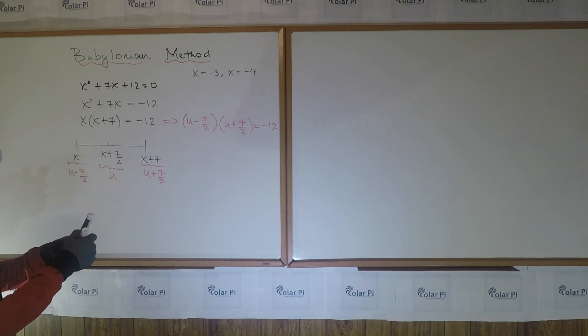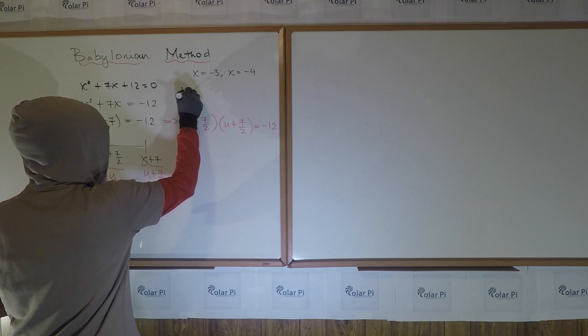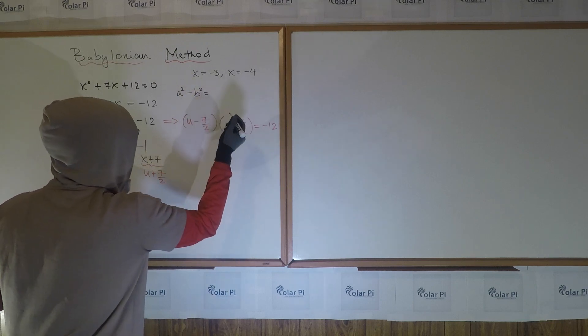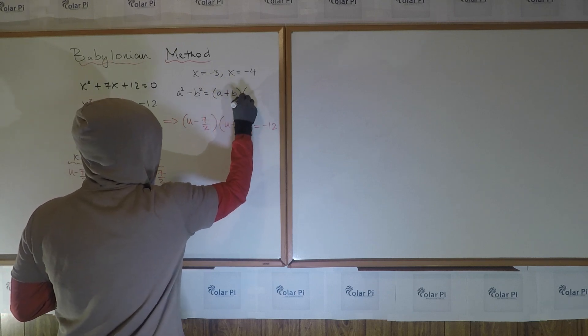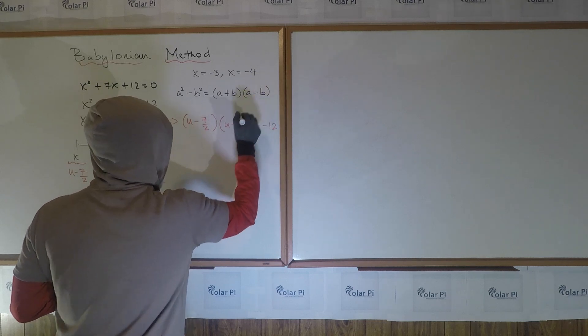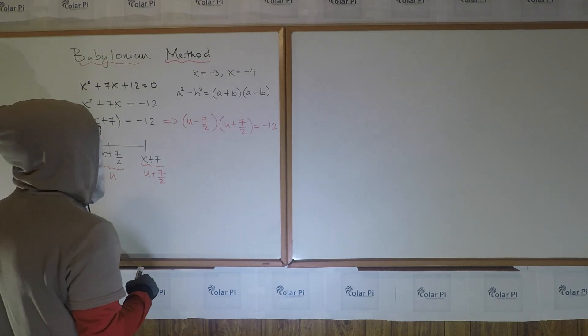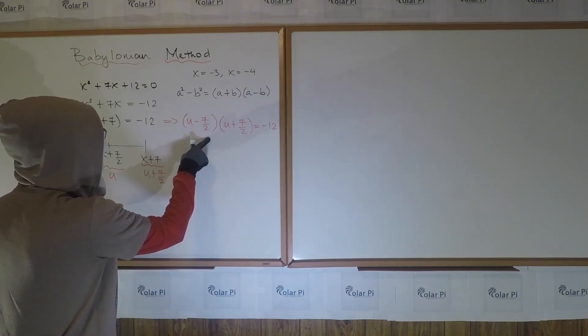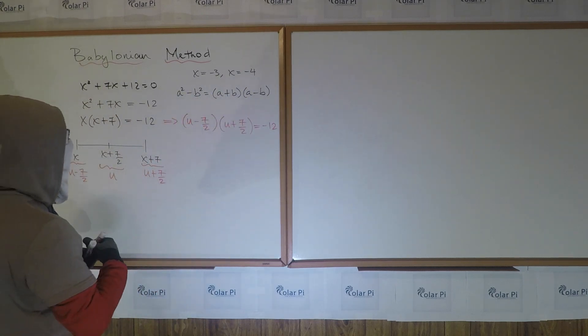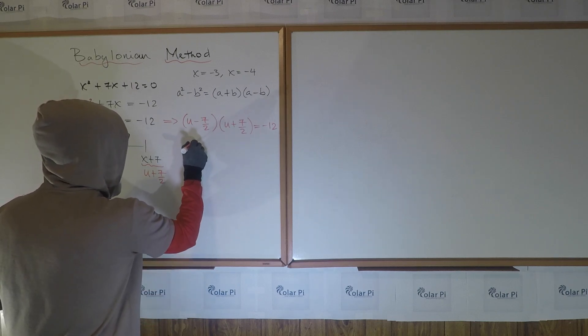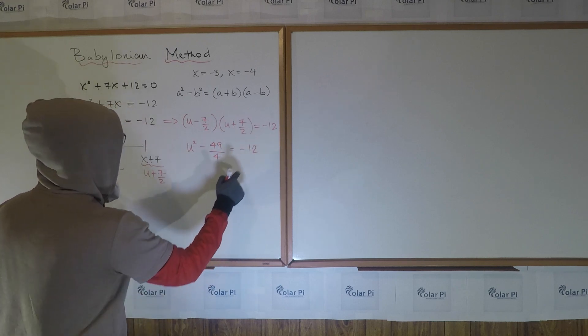Now, one of my favorite algebra properties, if not my favorite period algebra property, is difference of squares, which says a² - b² equals (a + b)(a - b). It comes up in so many places and it's so cool and useful. So that's exactly what we have here, and that's exactly what we should have at this step in the Babylonian method. With u being a and 7/2 being b, when we multiply these two using this, we should get u² - (7/2)² = u² - 49/4 = -12.